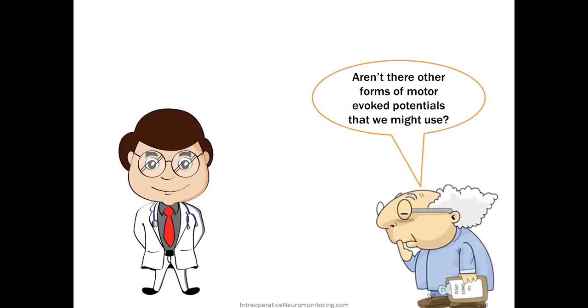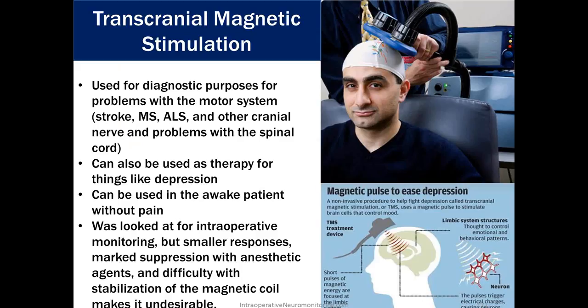Aren't there other forms of motor evoked potentials that we might use? There's transcranial magnetic stimulation. This is used in awake patients for a lot of variable things. Used for diagnostic purposes for problems with motor systems like a stroke, multiple sclerosis, ALS, and other cranial nerve and problems with the spinal cord. Can also be used for therapy for things like depression. Can be used in the awake patient without pain. Was looked at for intraoperative monitoring, but smaller responses marked suppression with anesthetic agents and difficulty with stabilization of the magnetic coil makes it undesirable. So slight movements of that big coil cause big problems in your recording.